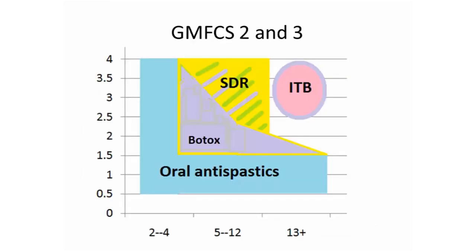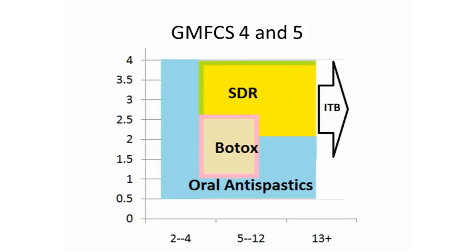This is a summary of all treatments by age and Ashworth score for GMFCS 2 and 3 kids, and then GMFCS 4 and 5. At any age, you can use oral antispastics, but if they're not working, you can benefit from Botox, SDR, or intrathecal baclofen. For GMFCS 4 and 5, you can take SDR up to about age 13, after which you're looking at intrathecal baclofen.